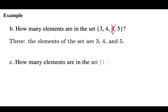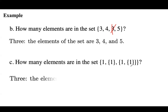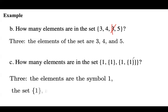Next question: how many elements are in the set including 1, a set including 1, and another set which includes 1 and a set including 1? There are 3 distinct elements here — 3 members in this set. The elements are: 1, the set {1}, and another set which includes two other members: 1 and {1}. So the cardinality of this set is 3.